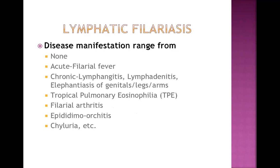Another presentation is tropical pulmonary eosinophilia. When microfilariae are circulating in the blood and become trapped in the pulmonary circulation, our immune system identifies them and mounts a reaction with a lot of eosinophilia, since eosinophilia occurs in worm infestation. This tropical pulmonary eosinophilia presents with lung symptoms along with eosinophilia in peripheral blood.